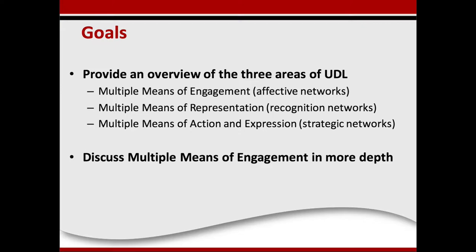The goals for the workshop today are that we will provide an overview of the three areas of Universal Design for Learning. The three areas are multiple means of engagement, which is related to the affective networks of the brain; multiple means of representation, related to recognition networks; and multiple means of action and expression, which connects with the strategic networks of the brain. The major focus of today will be on multiple means of engagement, with subsequent sessions in March and April covering the other two areas.